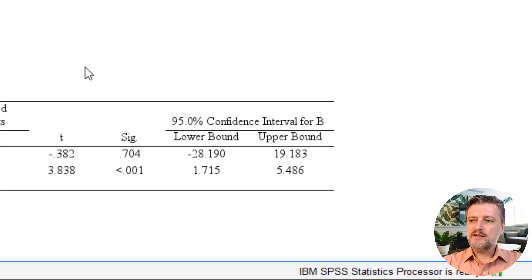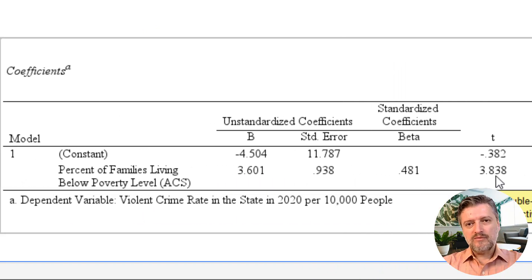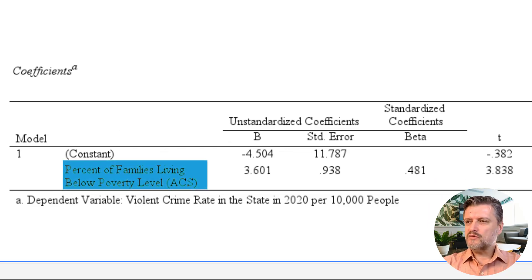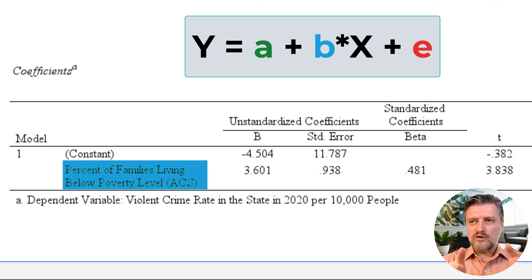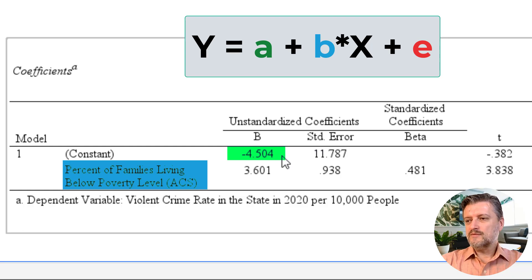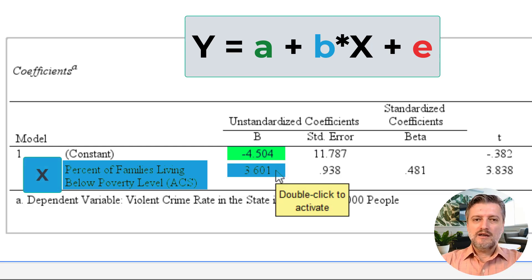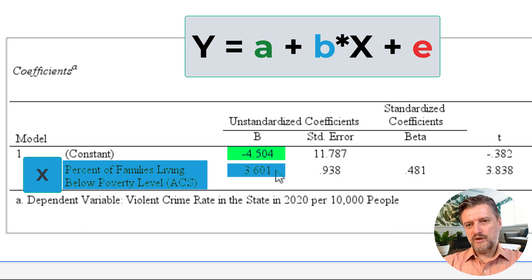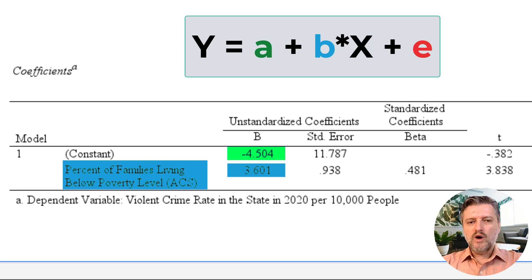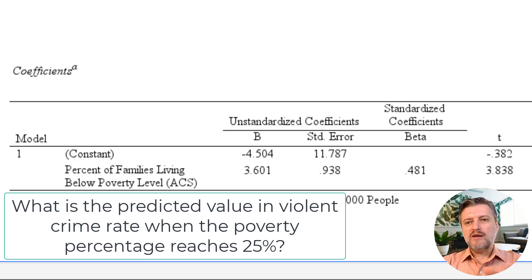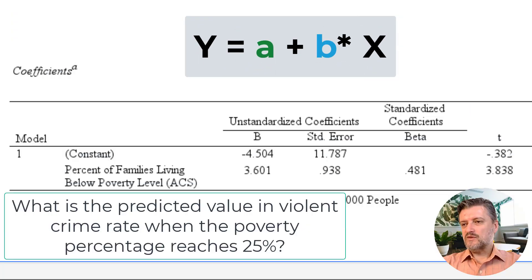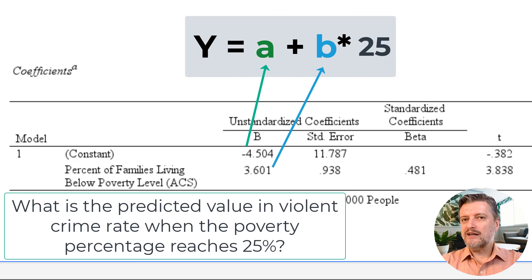Because this test shows significance, we construct the regression equation: y (dependent variable) equals a (constant) plus b times the independent variable, plus some error. For example, what is the violent crime rate predicted to be when the percent of families below poverty level reaches 25%? We substitute 25 for x, and the predicted value of the dependent variable is going to be 85.5 — a violent crime rate of 85.5 per 10,000 people.